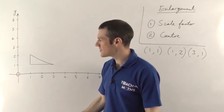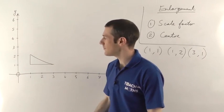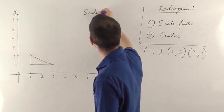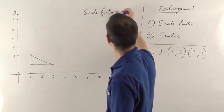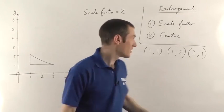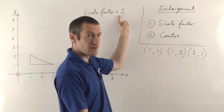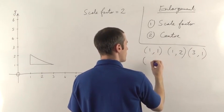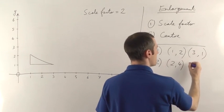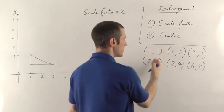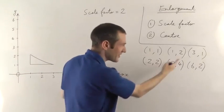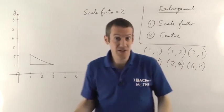If the centre of enlargement is the origin, then whatever the scale factor is — let's imagine a scale factor of 2, so everything's going to get twice as big — you just multiply all of your coordinates by the scale factor. So instead of 1 comma 1, you get 2 comma 2. 1 comma 2 becomes 2 comma 4, and 3 comma 1 becomes 6 comma 2. Each of the numbers has just become twice as big because the scale factor is 2. If the scale factor is 3, they become 3 times as big. Then you just plot the points.